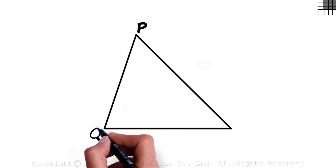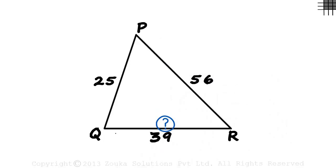Consider a triangle PQR with sides 25, 39 and 56 units. How do we find the area of this triangle?